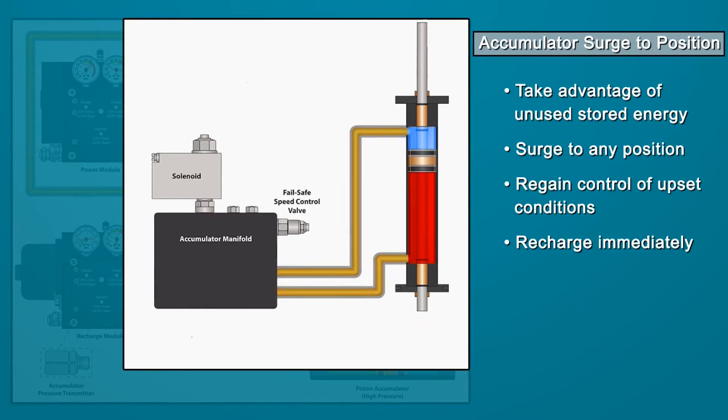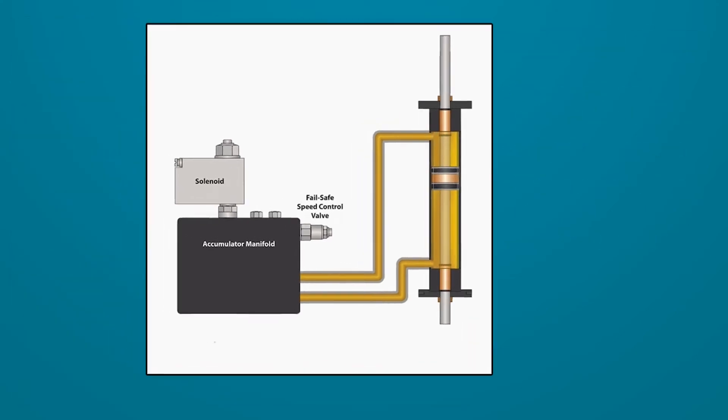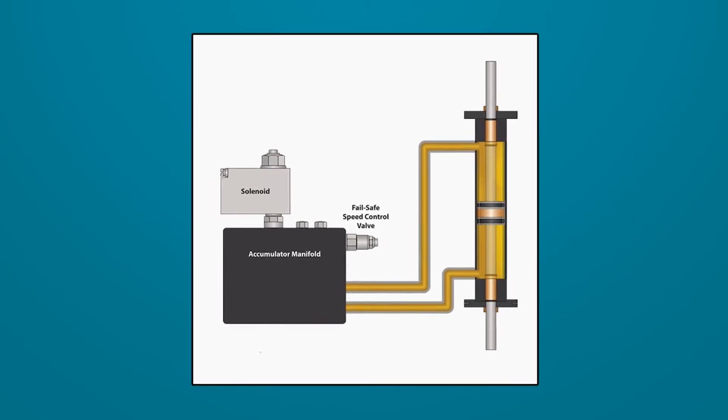This surge capability takes advantage of stored energy for large and fast step changes beyond the speed capability of the actuator's standard power module. When an upset condition requires a large step change, the quickest way to reach the new target position and get the process under control is through an accumulator surge.